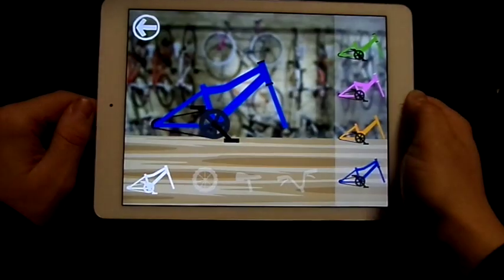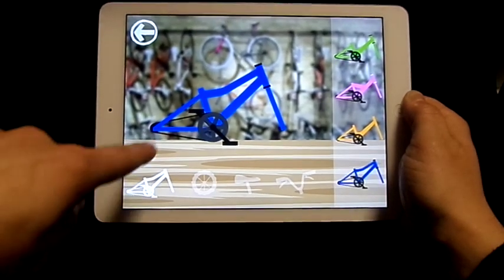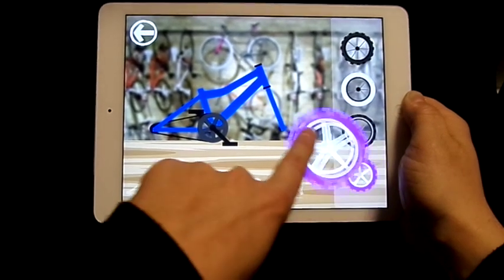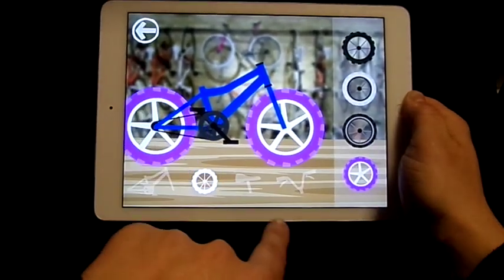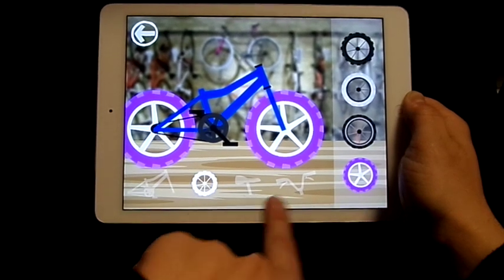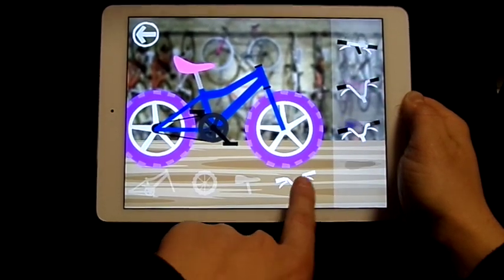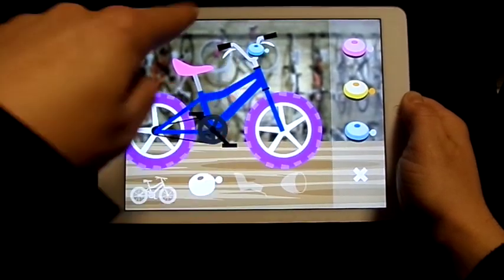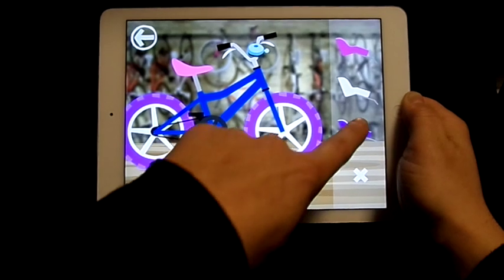This is one of my favorite ones as well. So you've got to basically make the bike up. So choose the wheels, the seat, handlebars, bell, seat in the back.